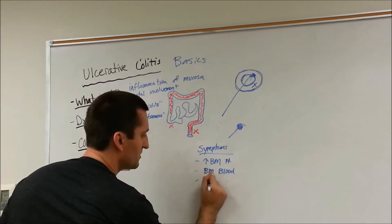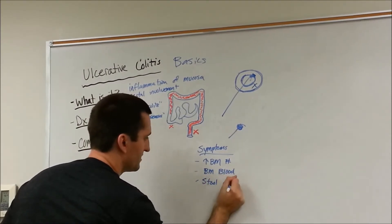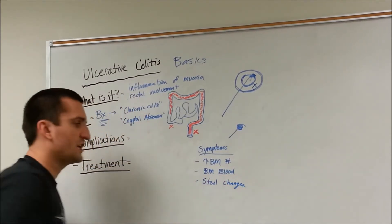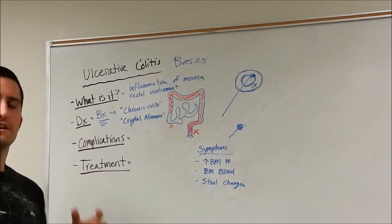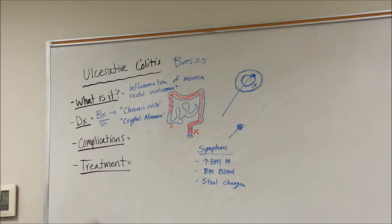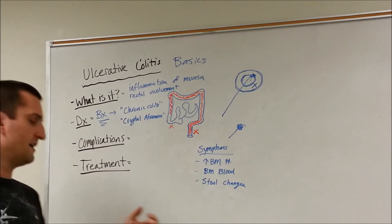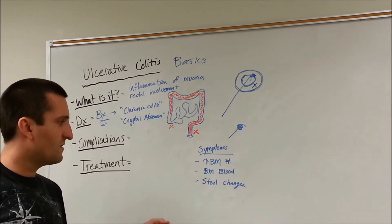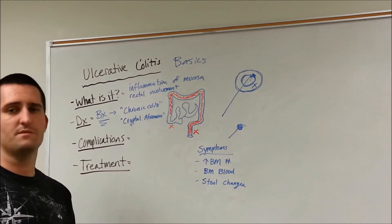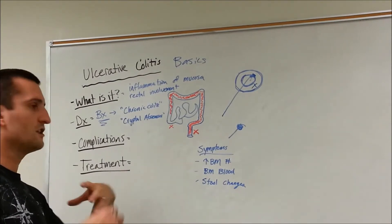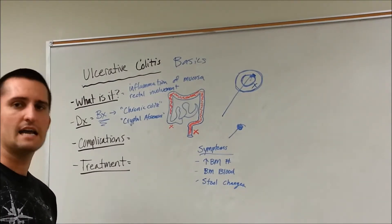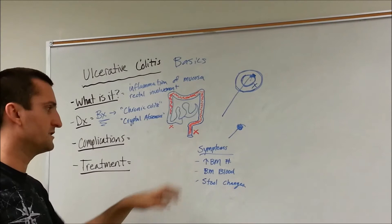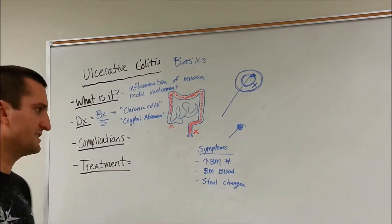You may also see stool changes. Stool changes meaning, typically, a stool is a well-formed, kind of semi-solid, mostly solid particle. Now, in ulcerative colitis, the stool may be more loose. So, you'll see a loose, kind of like diarrhea-type bowel movement with blood associated with increased bowel movements as well.